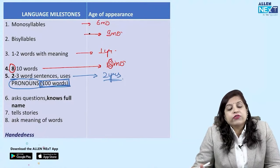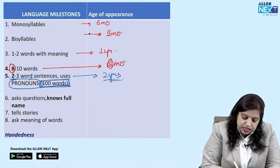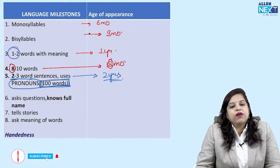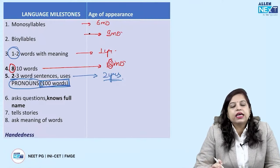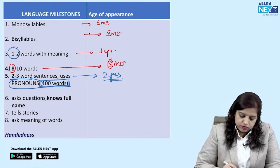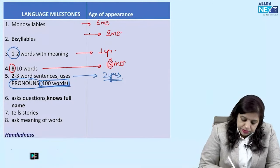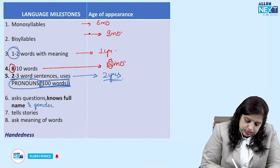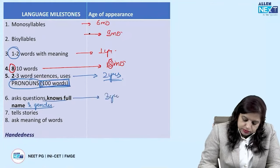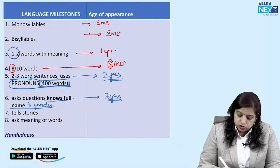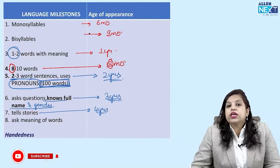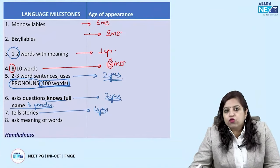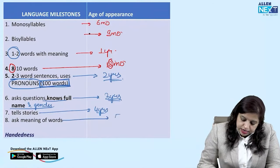At two years of age, vocabulary increases greatly to 100 words. Imagine: at one year the child has just one to two words with meaning, while at two years the vocabulary is 100 words and they can make two to three word sentences. Knowing full name and gender comes at three years. Telling stories comes at four years, and asking the meaning of words at five years.